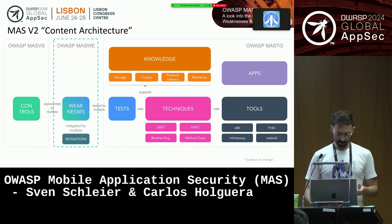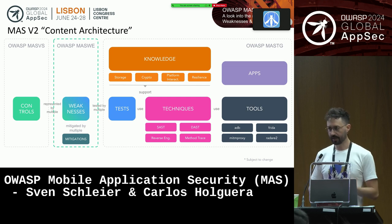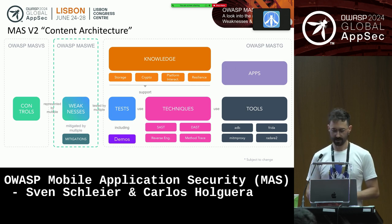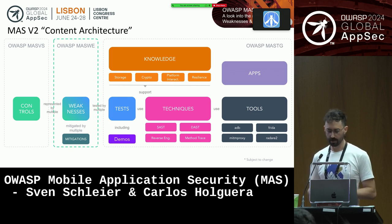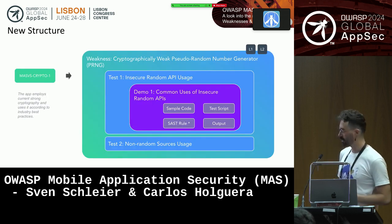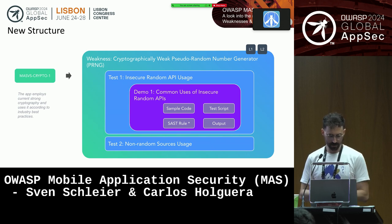This is great because now we can close this gap. The controls on the MASVS are very, very high level. Now we can get more specific with weaknesses, and then go to the tests to be even more specific. There are three new components: one is the weaknesses, the new tests in version 2 that will change from the ones you already know, and these tests will come with demos. So you have an MASVS control that is very high level — for example, the app should employ current cryptography according to best practices.